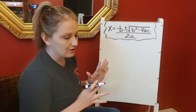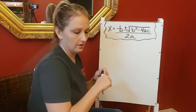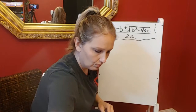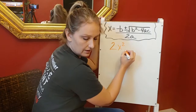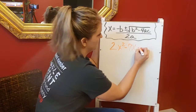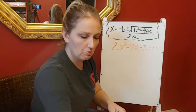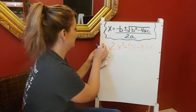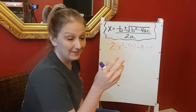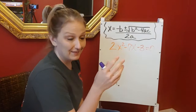Let's do one more example with the quadratic formula: 2x squared minus 7x minus 3. This one will be a little different because we're going to have to leave the answer in radical form — meaning part of the answer stays under a square root. My a is 2, my b is negative 7, and my c is negative 3. I'm going to plug that into the quadratic formula.